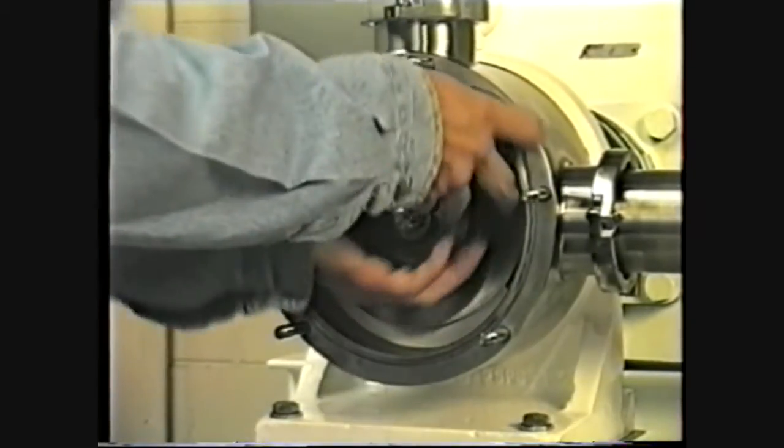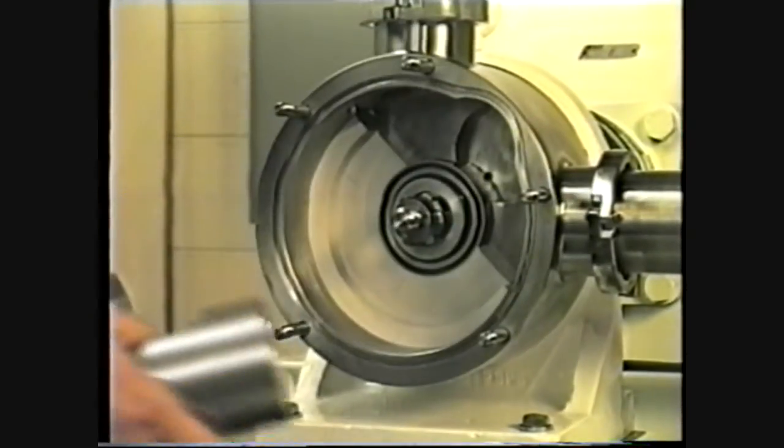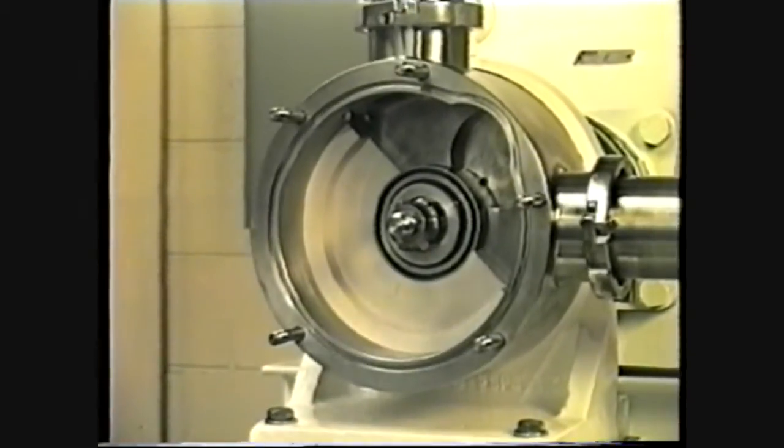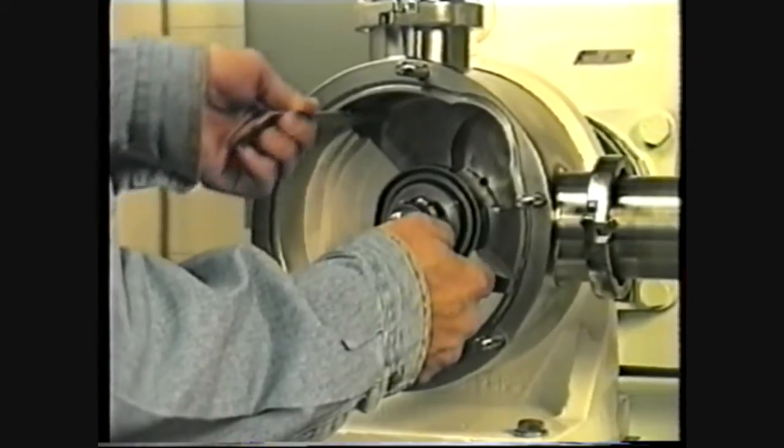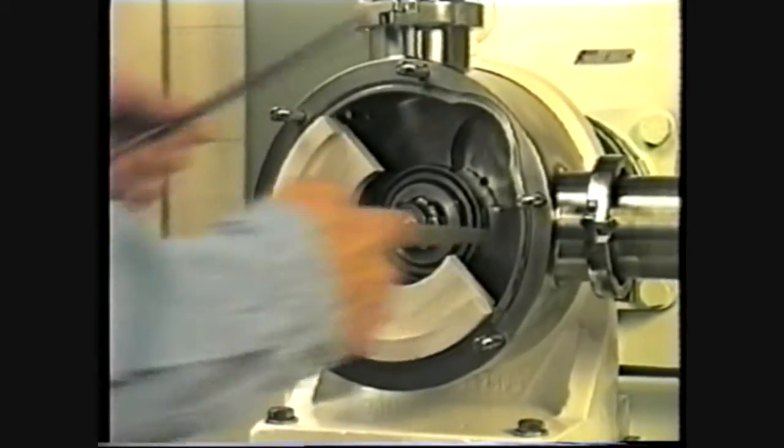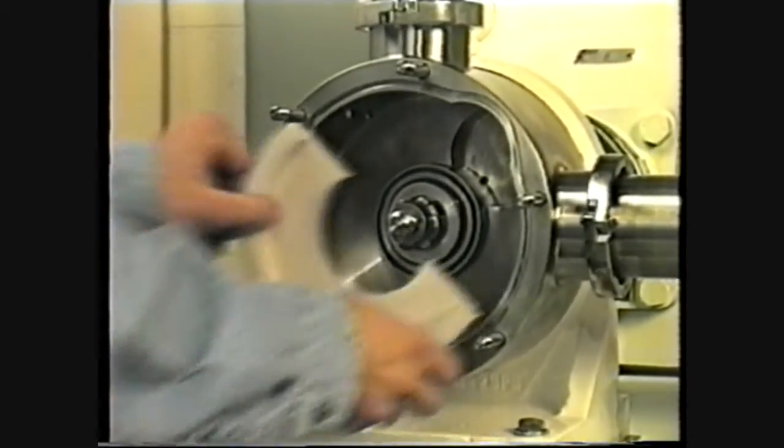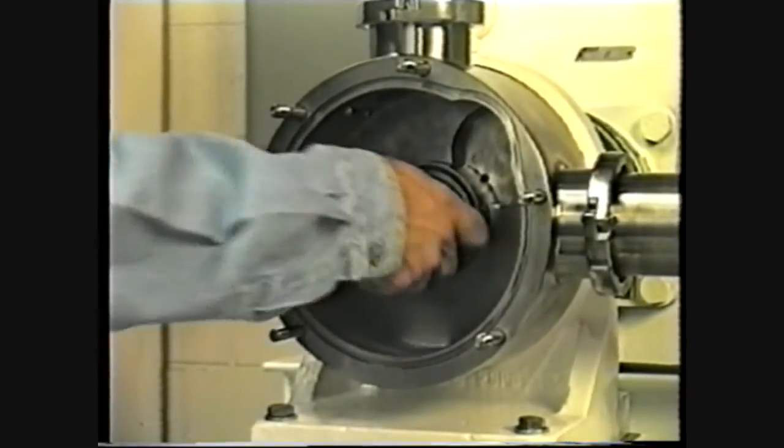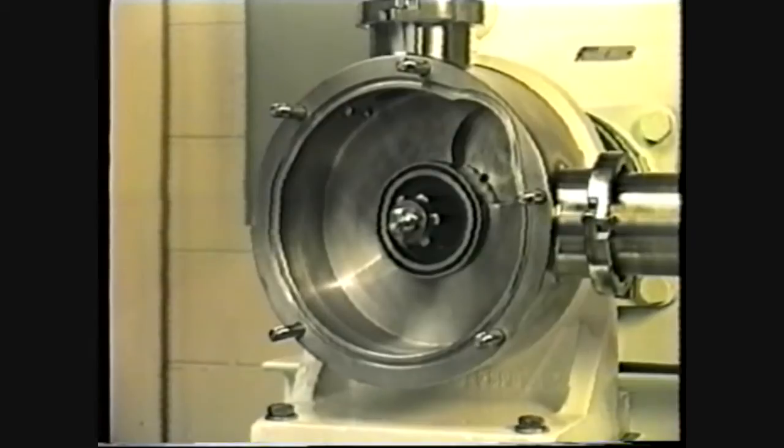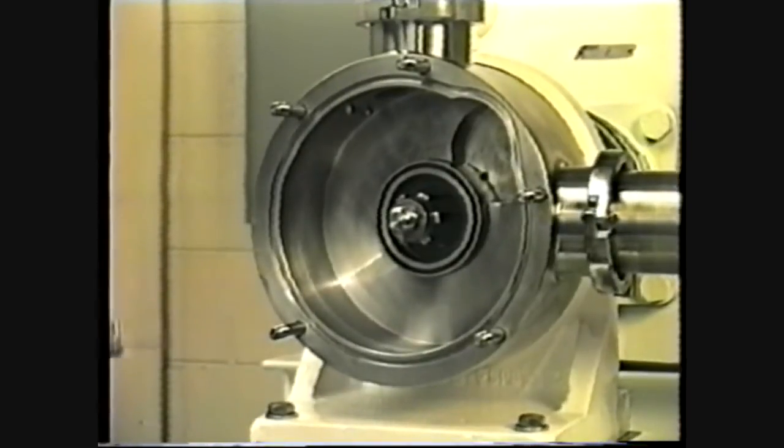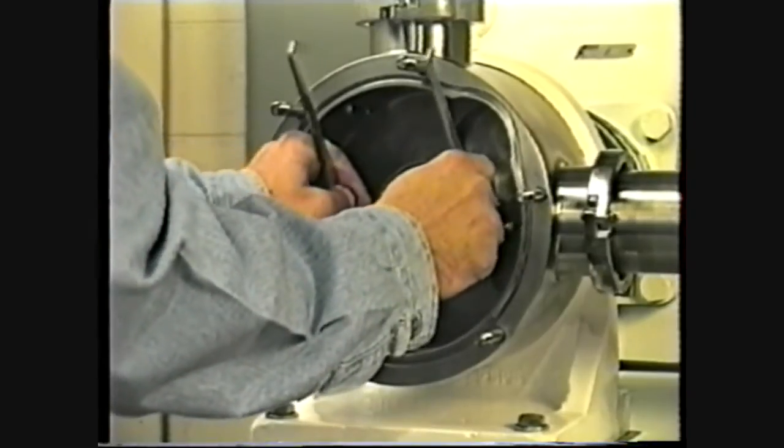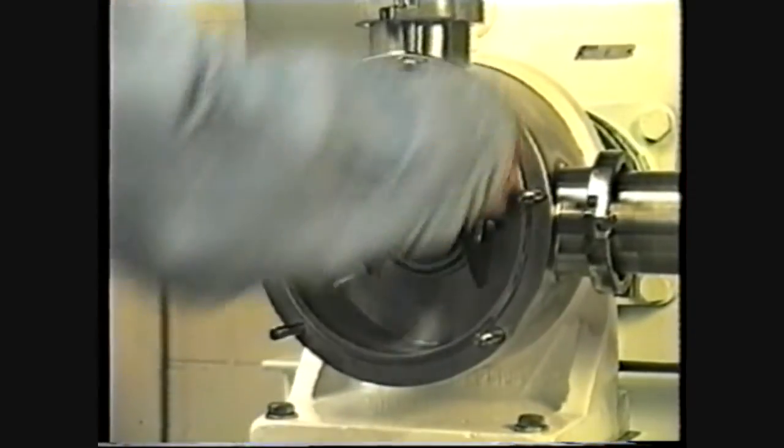Then remove the rotor, scraper gate, and scraper gate guide. The back liner comes off the same as the front liner. Remove the shaft sleeve. Finally, remove the seal housing and seal housing o-ring, and the pump has been fully disassembled.